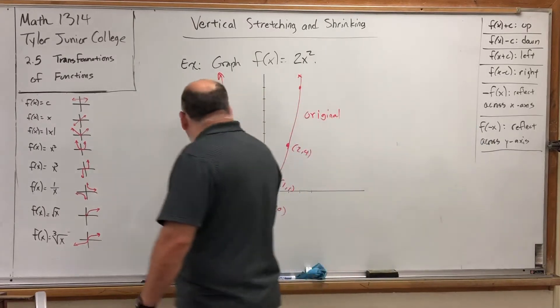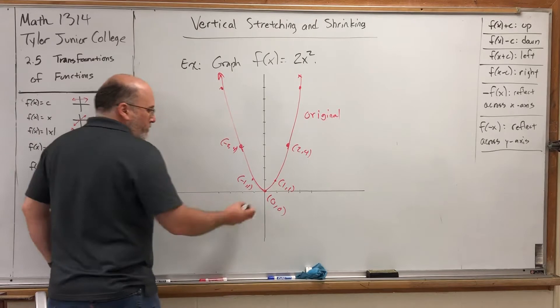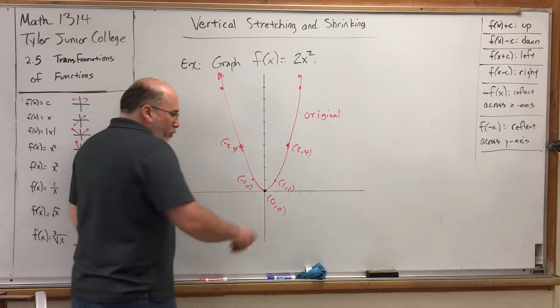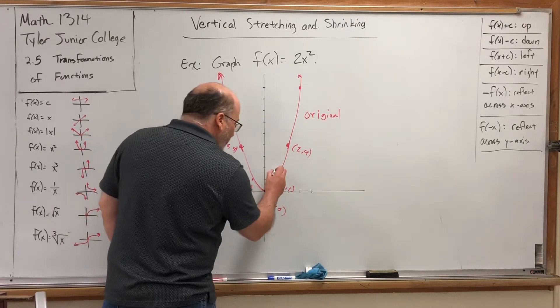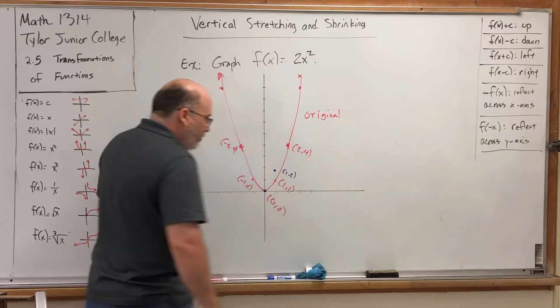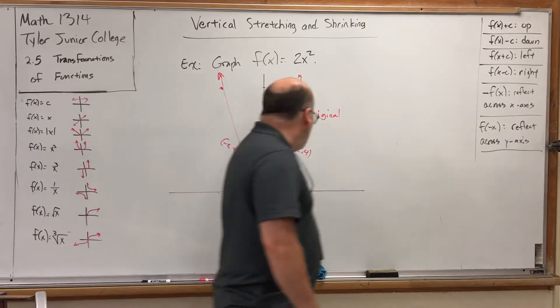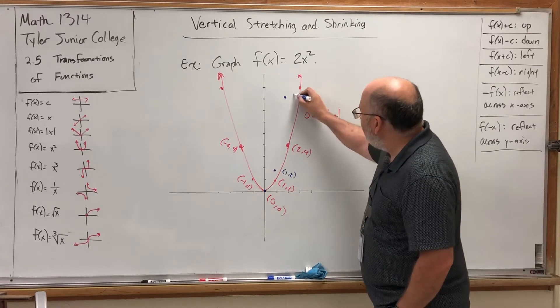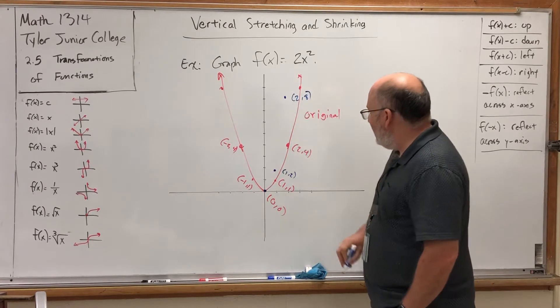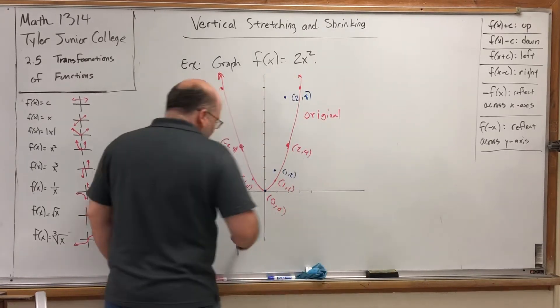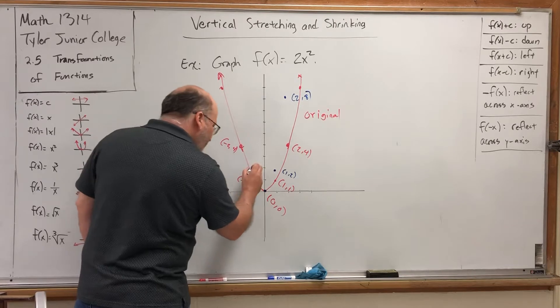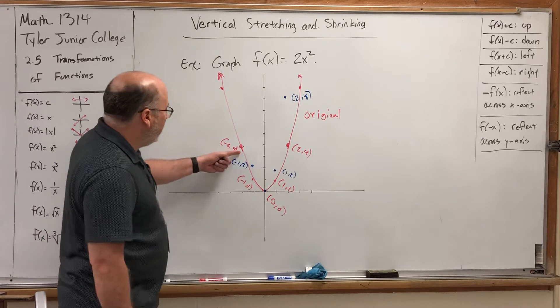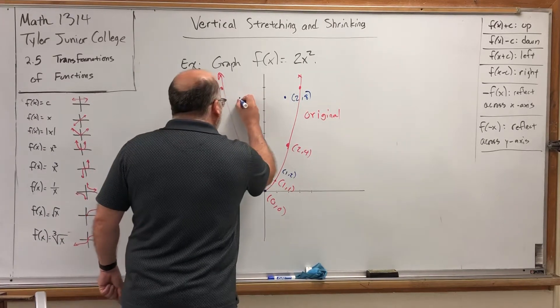That means each of our y values will get doubled. So, where will these points land if we double each of the y values? Well, the origin won't move because if you double 0, you still get 0. But on the point 1, 1, if we double the y value, we get 1, 2. What do we get if we double the y value on the original point 2, 4? We get 2, 8 clear up here. And the same thing will happen on the left side. If we double the y coordinate on negative 1, 1, we get negative 1, 2. And if we double the y coordinate on negative 2, 4, we get negative 2, 8.